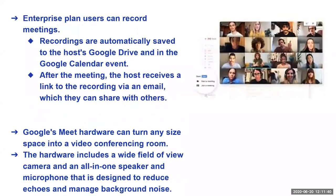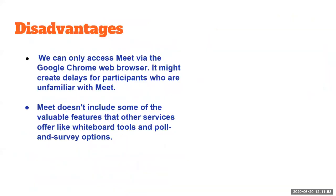Video sharing and screen sharing are possible. You can see almost 16 people on a laptop and about nine on a mobile phone. The disadvantage is that you need a Chrome browser — it works best only in Chrome. One feature it doesn't have is whiteboard and polls. Instead of a whiteboard, you can use Jamboard if you are a Google user.